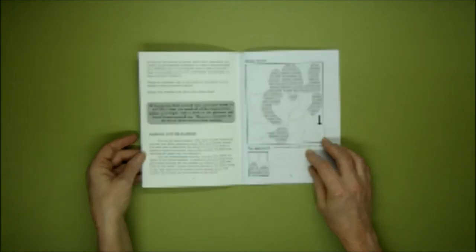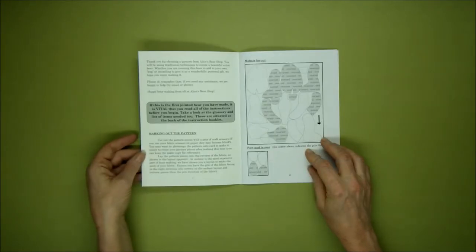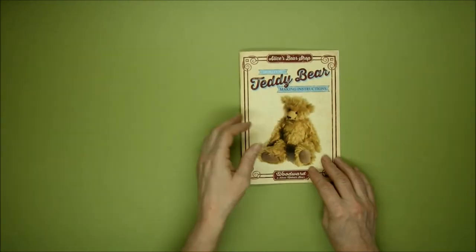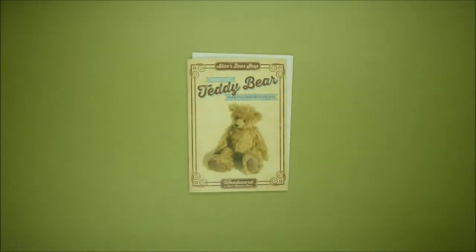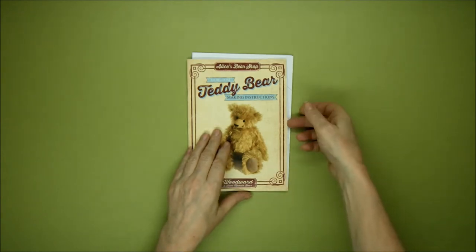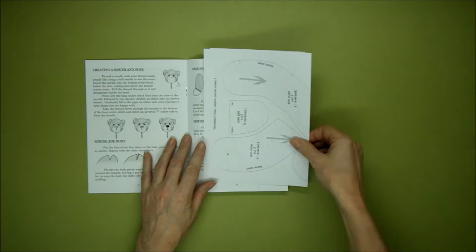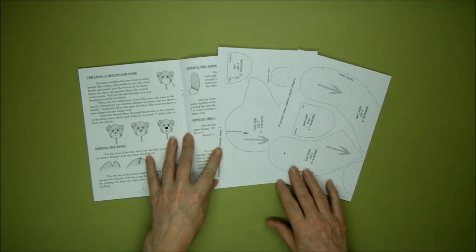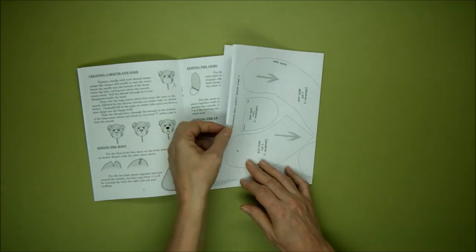Right, first of all we're going to cut out our pattern. Inside your instruction booklet you'll find your pattern sheets. Depending on what size bear you're making, you might have one, two, or even three pattern sheets. This is a two-sheet pattern and I'm going to cut this out and glue it onto card.